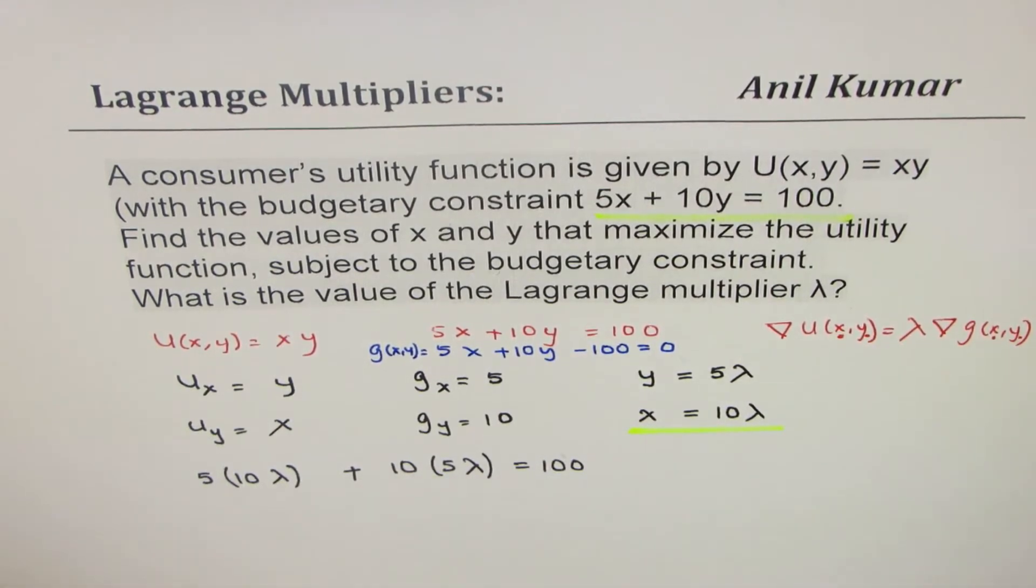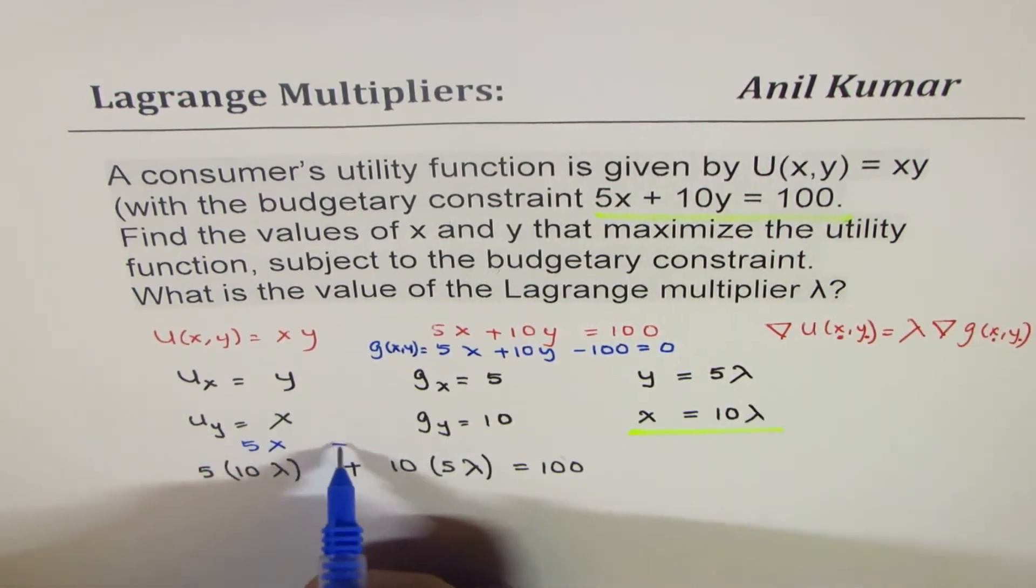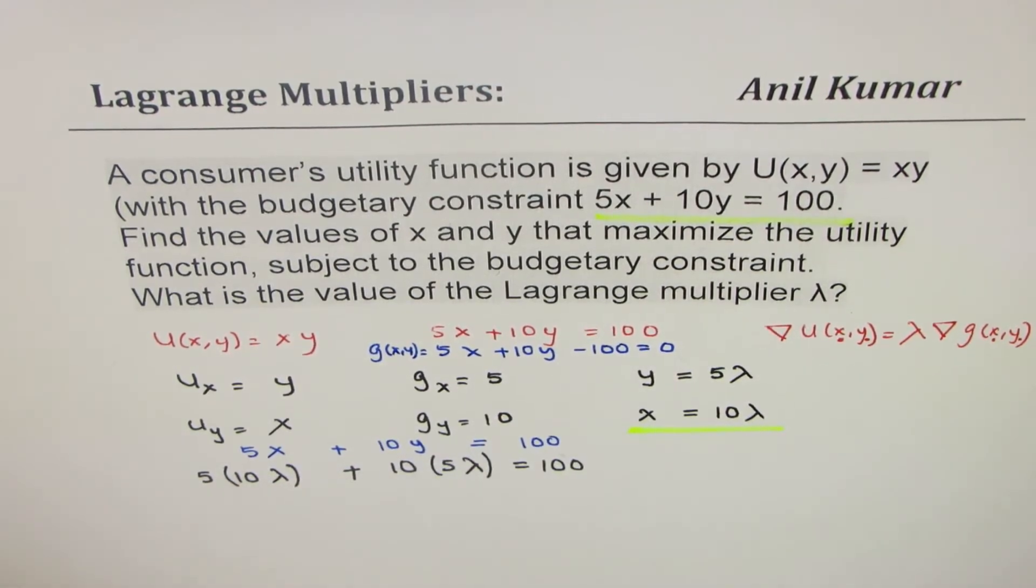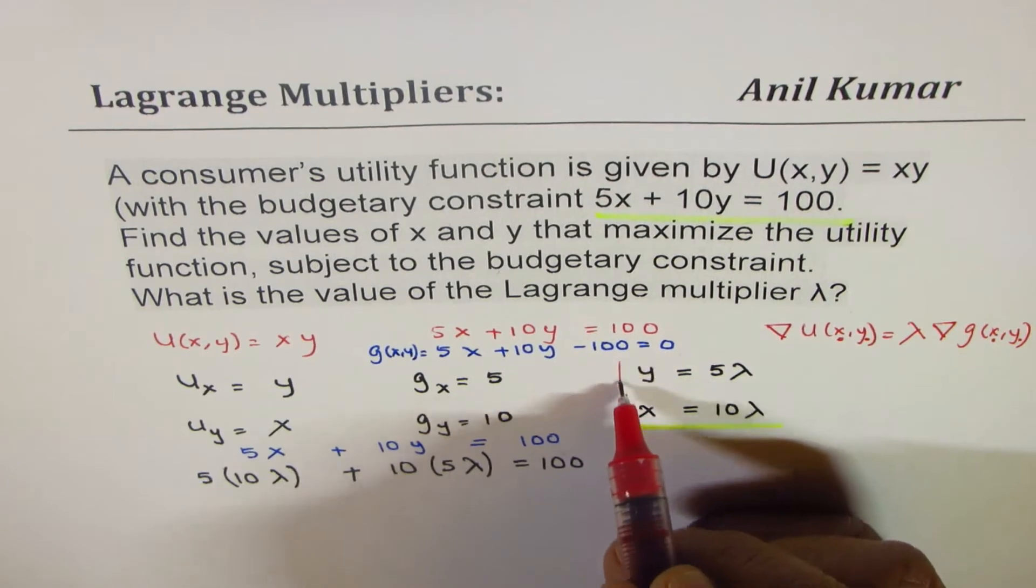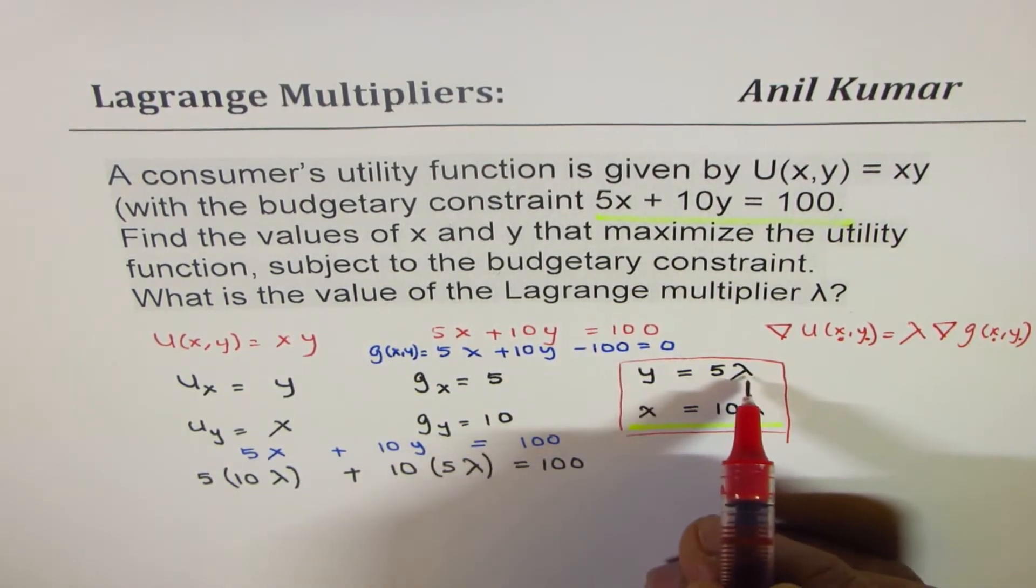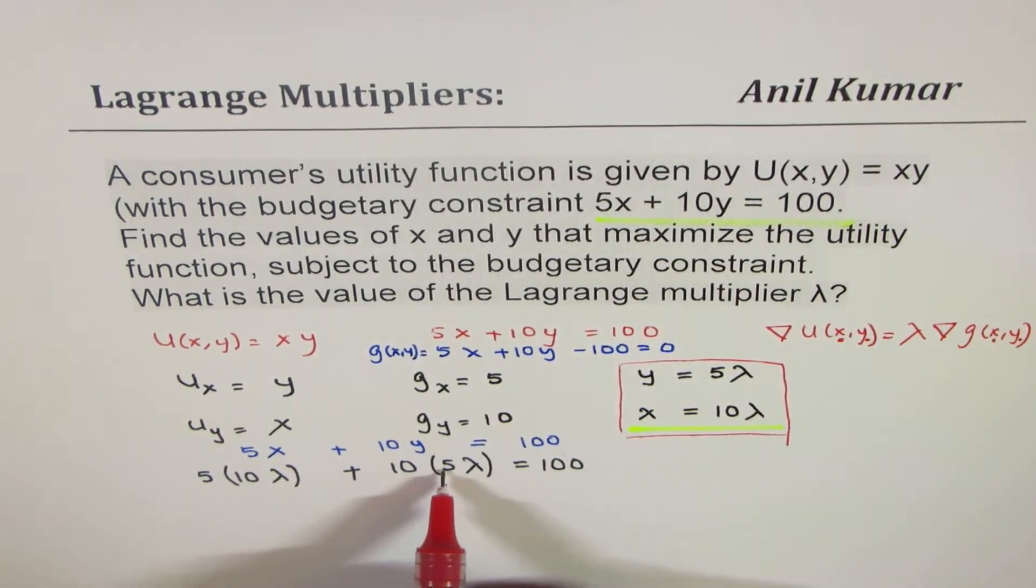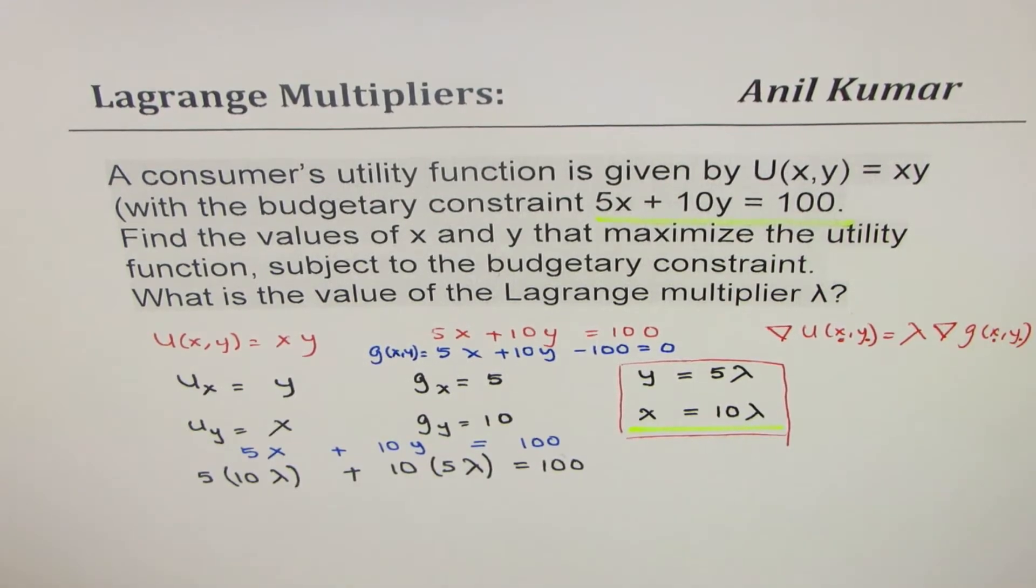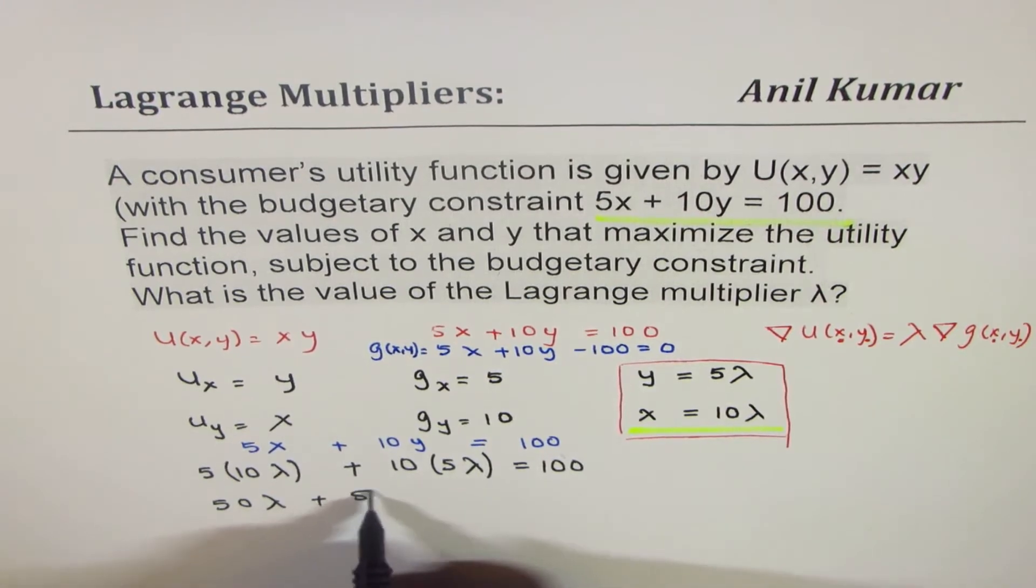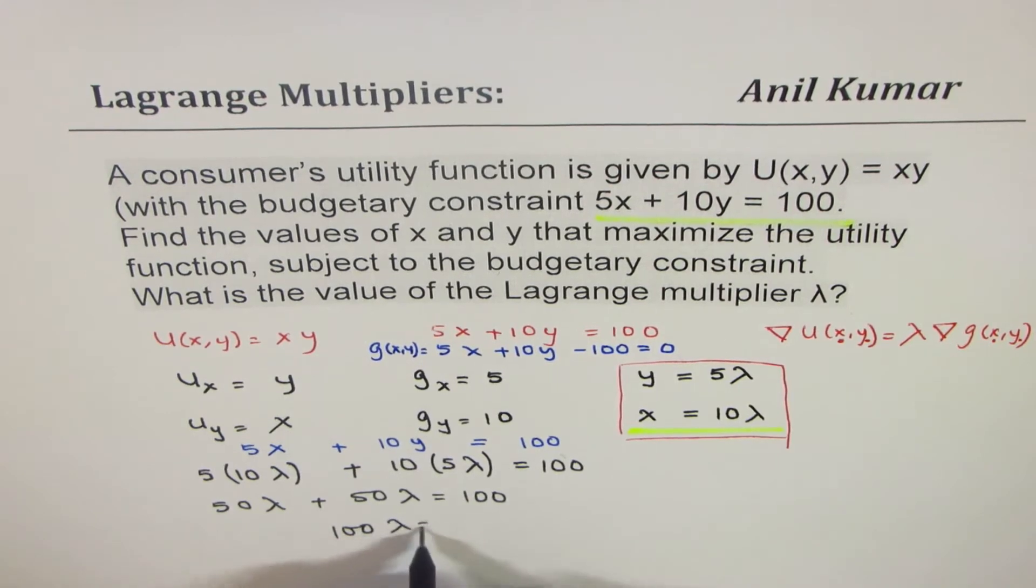Plus 10 times y, 10 times y is 5 lambda, 5 lambda equals 100. So basically, what we have done is, in our utility function, which is 5x plus 10y equals 100, we have substituted these values. So 5 times 10 lambda and 10 times 5 lambda equals 100. So that gives us 50 lambda plus 50 lambda equals 100, or 100 lambda equals 100.